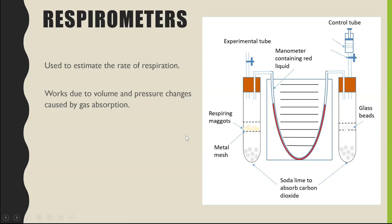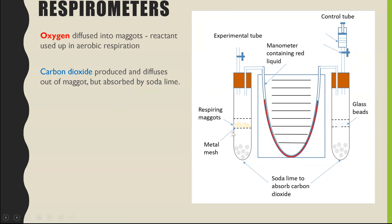So what we'd then expect is if we have this all set up, then close the taps to make sure it's completely airtight. You then set a timer and look at how far the colored liquid moves over a set period of time. And what we'd expect to happen is the maggots will be respiring, and for aerobic respiration they'll be using up oxygen, and that will then mean to replace the oxygen used, oxygen from the gas, the air within the experimental tube, will diffuse into the maggots.